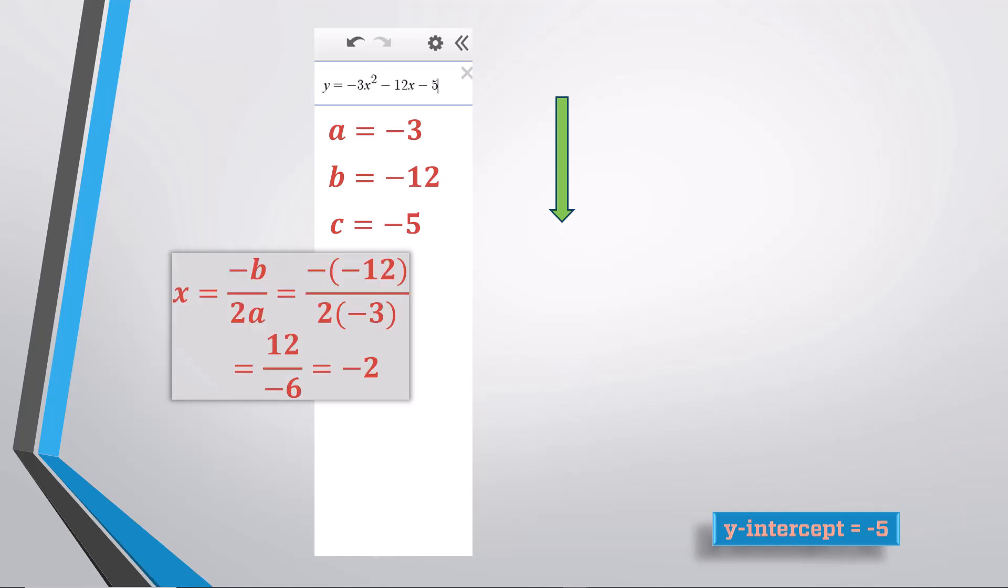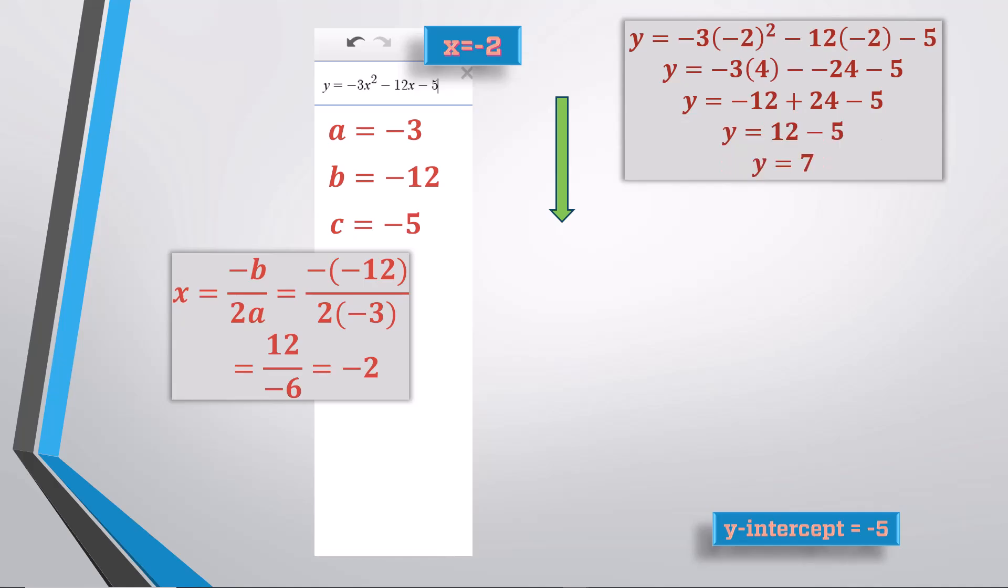For the x value, using the formula negative b over 2a, worked out to be the opposite of negative 12 over 2 times negative 3, simplifying to 12 over negative 6, and finally negative 2 for the x value of both the vertex and axis of symmetry. Using it to substitute into the equation to find y, which works out to be 7, also the maximum value of the graph. And we show the graph to confirm all these values to be correct.